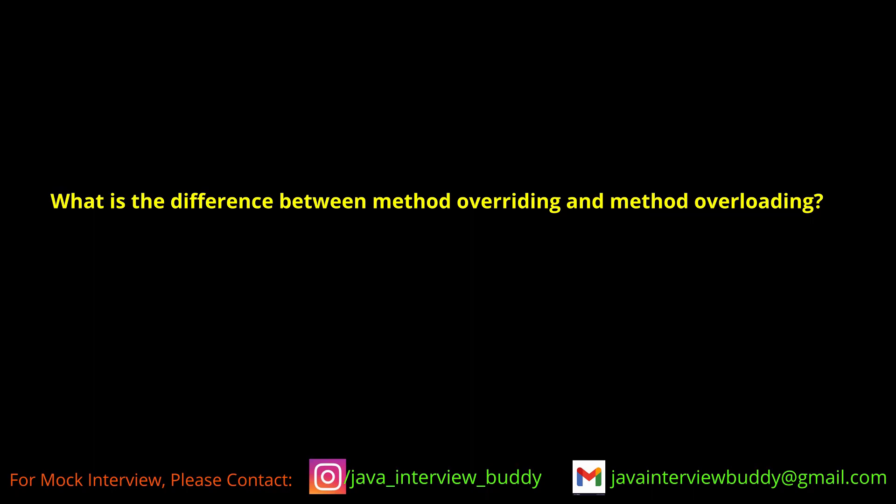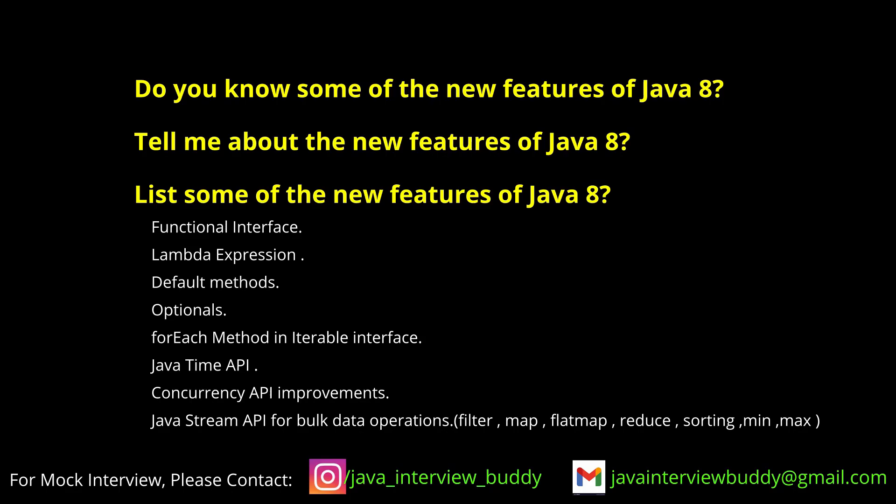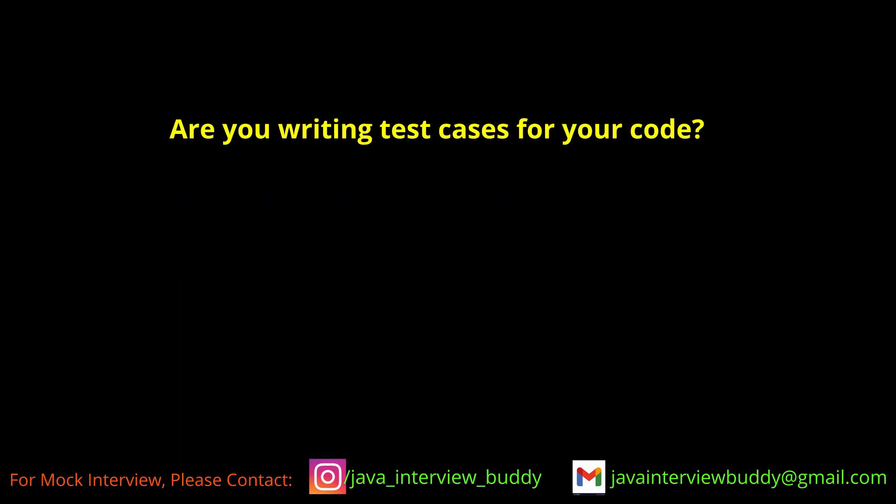In overloading, it is based on compile time — the object reference is resolved at compile time. What new Java 8 features have you been using? Right now we are using functional interfaces, lambda expressions, default and static methods in interfaces, Stream API, method references, Optional class, and the Date and Time API.